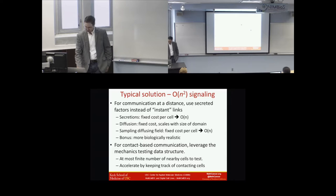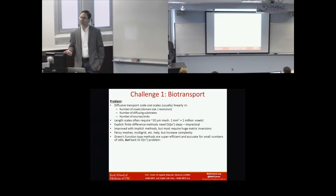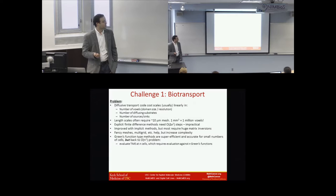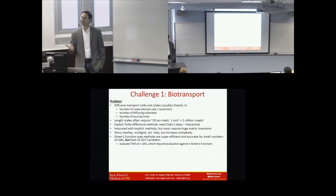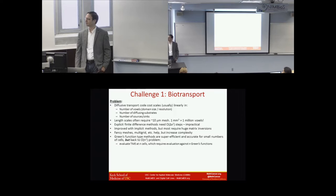A challenge we can all solve pretty well is biotransport. To do cell-cell interaction well, you have to handle many diffusing substrates in really large 3D volumes. The dumbest way is explicit finite differences, which has a tiny time-step restriction for stability. You can use implicit operations for stability, but then you have a huge matrix system to invert. Green's functions are great but turn it back into an order N-squared problem because you're evaluating point-source functions for all point-source uptakes. That doesn't scale nicely, although it looks beautiful.